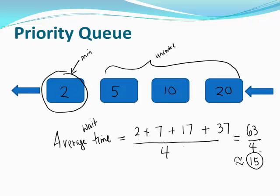Why is this important? Consider a router that receives data packets from various places. If you send packets in the order they arrive, a 2-gigabyte movie file would block a 2-kilobyte text file from being sent. By reordering using a priority queue, you can improve the average serve time for all packets. Priority queues can be very efficient data structures for implementing several such applications.